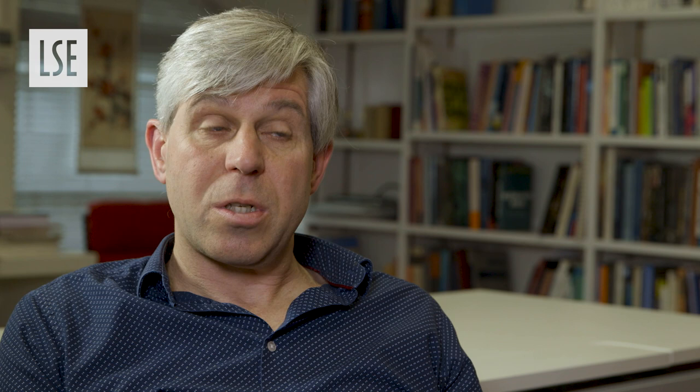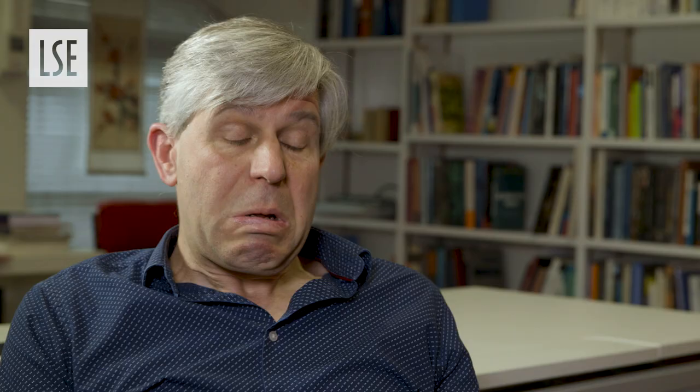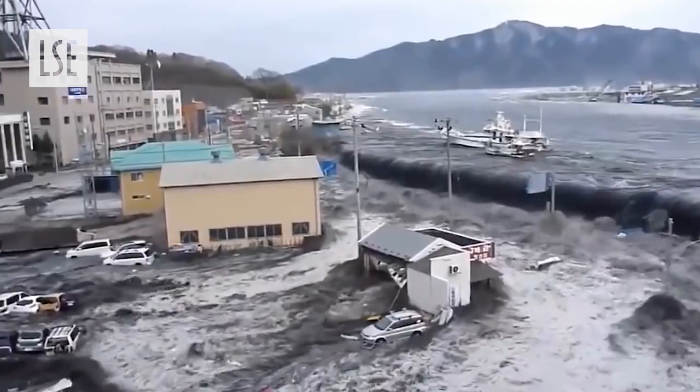I look at what sort of decision rules are appropriate to use in situations of different kinds of uncertainty. I've become particularly interested in the problem of what sort of decision rules or decision methods policy makers should use when they're drawing on scientific models to help them make decisions. One area I find particularly interesting is the way scientific models are used to help policy makers manage the threat of natural catastrophes.